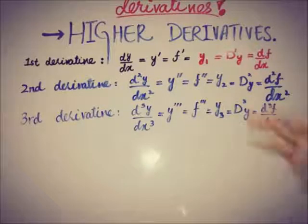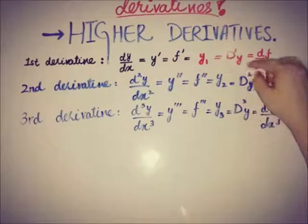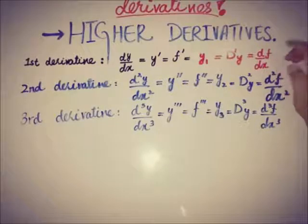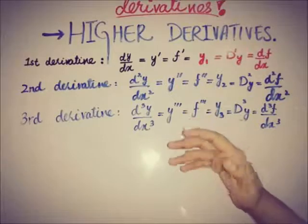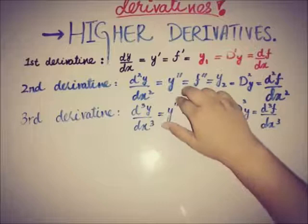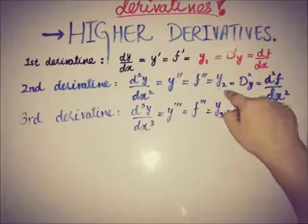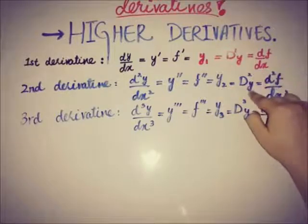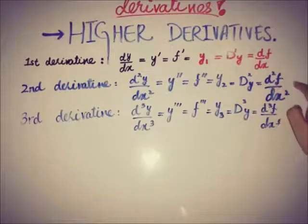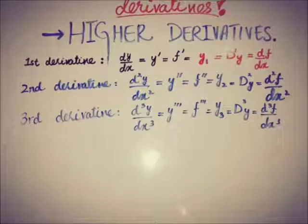There are a number of symbols we use for derivatives. The very common symbols are dy/dx, y-prime, and f-prime, and also y₁ for the first derivative of y and df/dx if f is the function. For the second derivative we have d²y/dx², y double-prime, f double-prime, and y₂. It can also be written as d²f/dx².